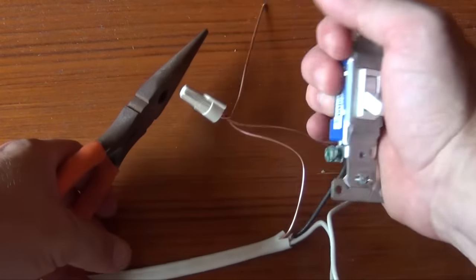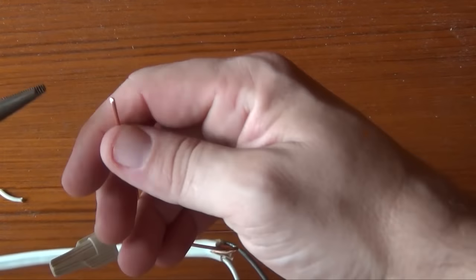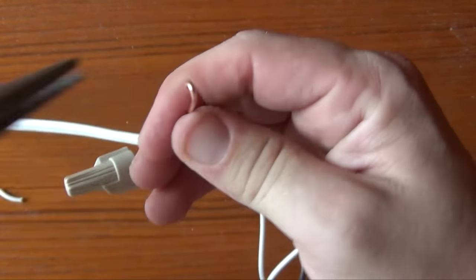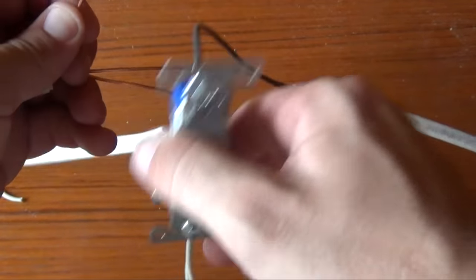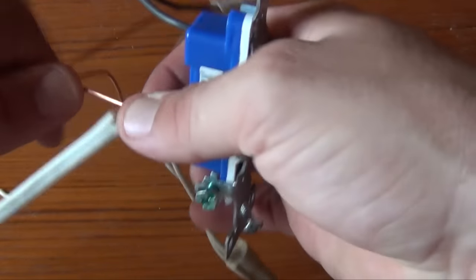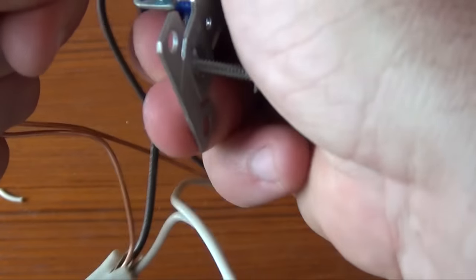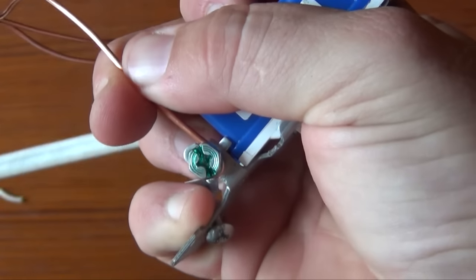We have one last connection to make in our light switch tutorial, so you need to pick up your bare ground copper wire and use your needle nose pliers to create a 180 degree loop. Hook around the green ground screw in a clockwise manner and use your Phillips screwdriver to tighten down on the loop. It is important to make sure you have a tight connection.